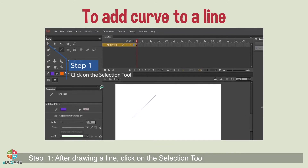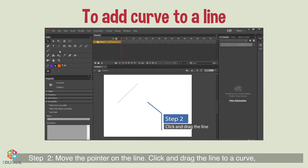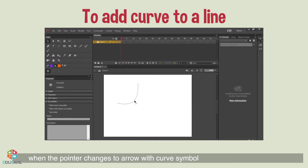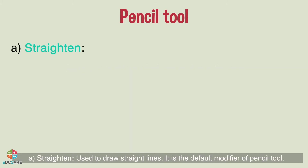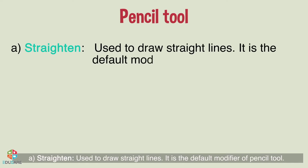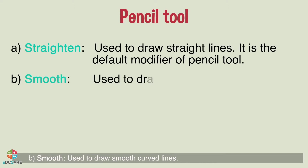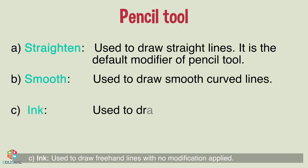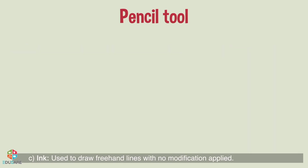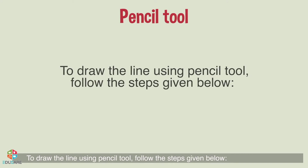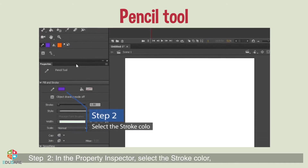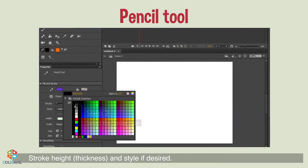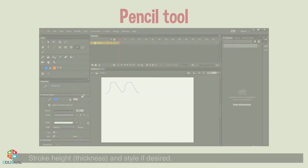Step 1: after drawing a line, click on the selection tool. Step 2: move the pointer on the line, click and drag the line to a curve when the pointer changes to an arrow with a curve symbol. Pencil tool: the pencil tool draws freehand lines in three different modes — Straighten, used to draw straight lines (it is the default modifier); Smooth, used to draw smooth curved lines; and Ink, used to draw freehand lines with no modification applied. Step 1: select the pencil tool and choose the desired option. Step 2: in the Property Inspector, select the stroke color, stroke height or thickness, and style if desired.